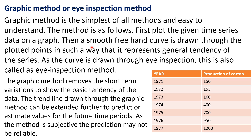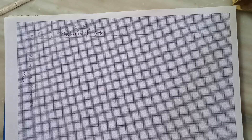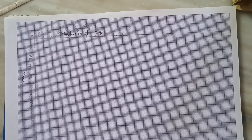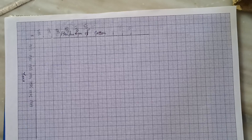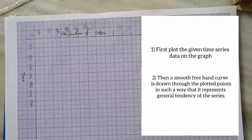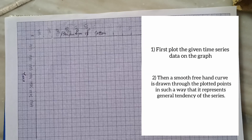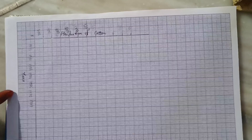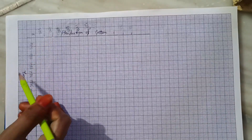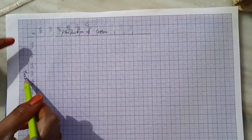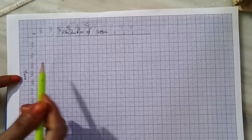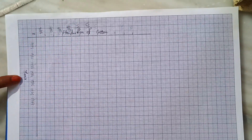We will learn this by doing it on a graph. First, we need to plot the given time series data on a graph. The data has two columns — year and production of cotton. I have written the year on the x-axis and the production of cotton on the y-axis.